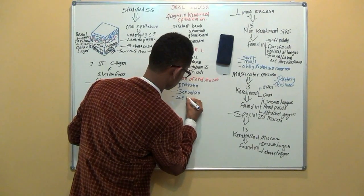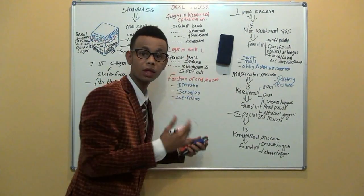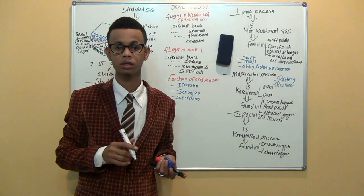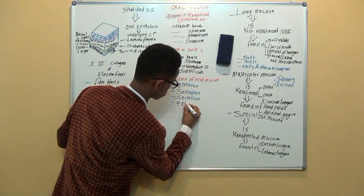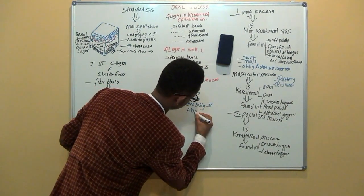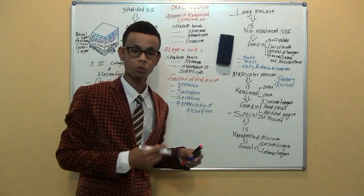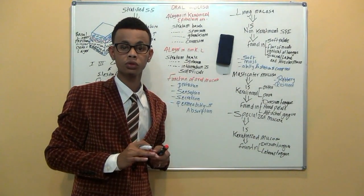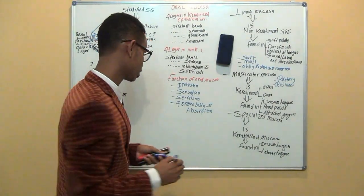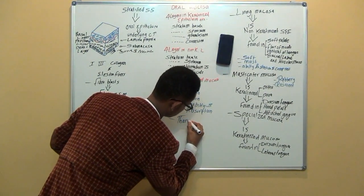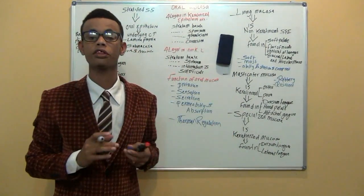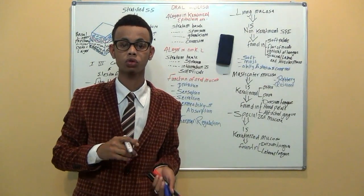The third one is secretion — saliva contributes to the maintenance of the mucosal surface. The fourth is permeability and absorption; the thinnest epithelium regions of the mucosa are more permeable than others. The last one is thermoregulation — body heat is dispatched through the oral mucosa.